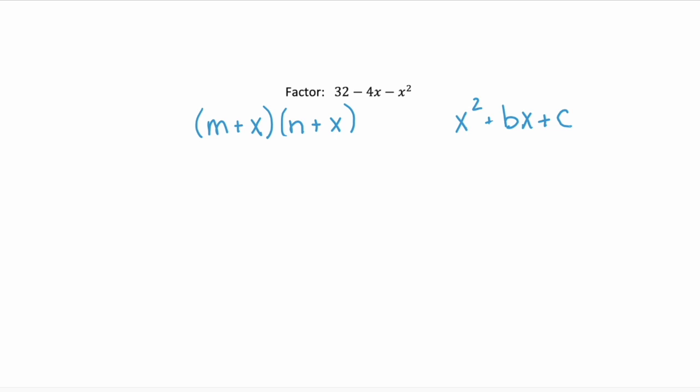So let's just write the given polynomial in the order that we're comfortable with. So it's negative x squared minus 4x plus 32 is what we're given. And immediately you notice that negative in the front of the x squared, well that's your GCF. So you have to factor that out before you can go any further. So if you factor out the negative 1, you'd have x squared plus 4x minus 32.